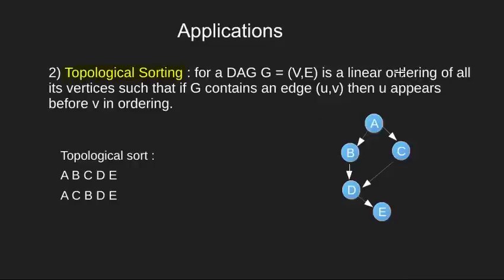Topological sort is for directed acyclic graphs only. It is linear ordering of vertices such that if a graph has an edge U, V then U should appear before V in ordering. We see this through an example graph.